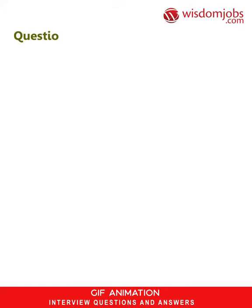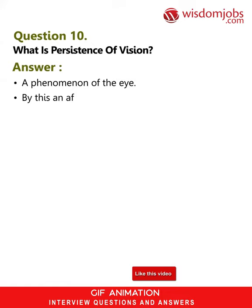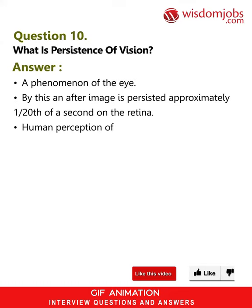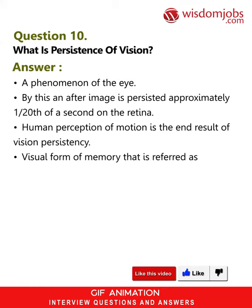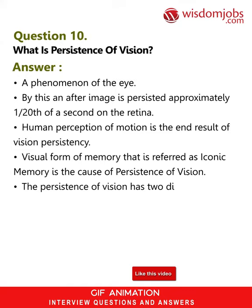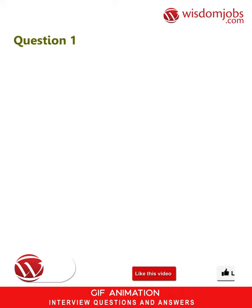Question 10: What is persistence of vision? Answer: A phenomenon of the eye by which after-images persist approximately 1/20th of a second on the retina. Human perception of motion is the end result of vision persistency. A visual form of memory referred to as iconic memory is the cause of persistence of vision. Persistence of vision has two distinct illusions: one, phi phenomenon, and two, beta movement.